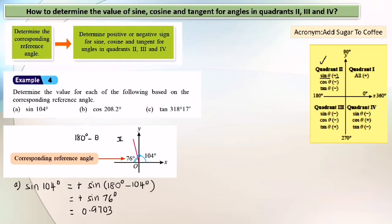How to obtain 0.9703? You just key into your calculator: sine 76, then press equal. You will obtain this number.